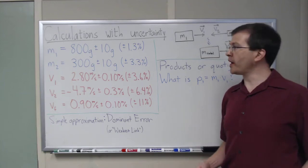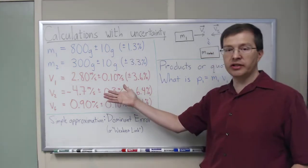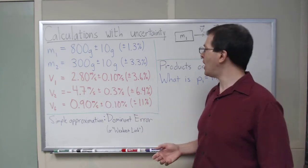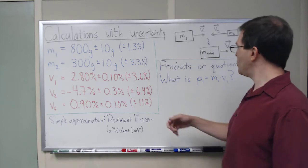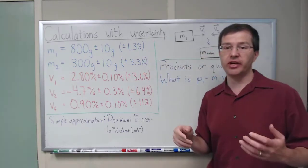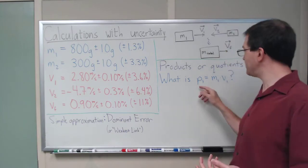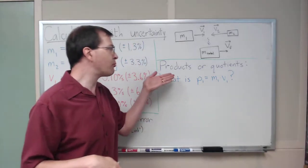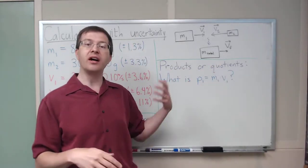This is one of a series of videos showing how you can take measured data with uncertainties and do calculations with it. For this particular example, I want to ask the question: in this system, what is the momentum of mass 1 before this collision? What is its initial momentum? Momentum is the product of mass times velocity, so this is an example of a product or quotient involving uncertainties.